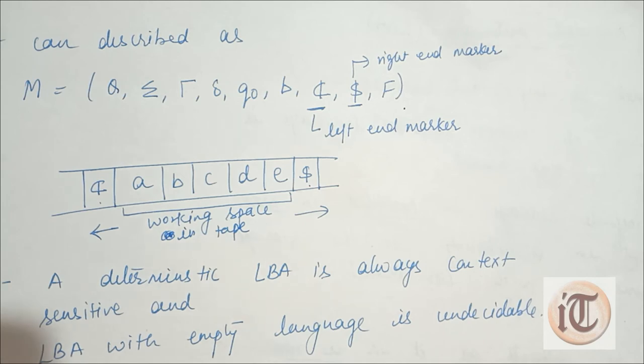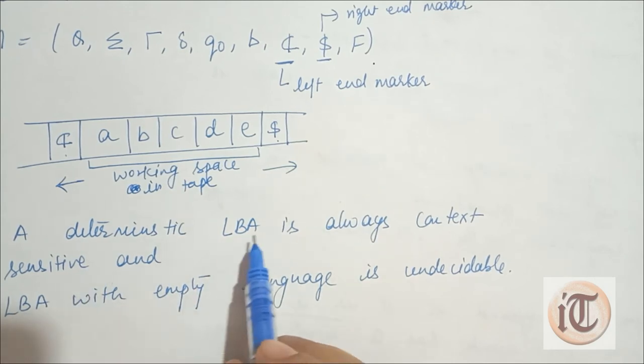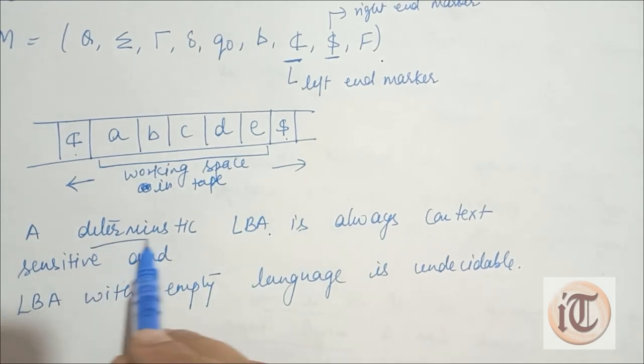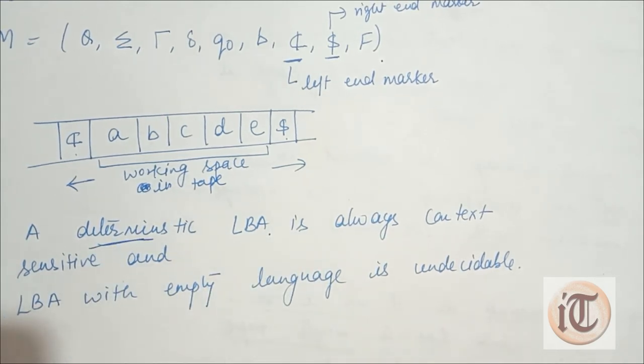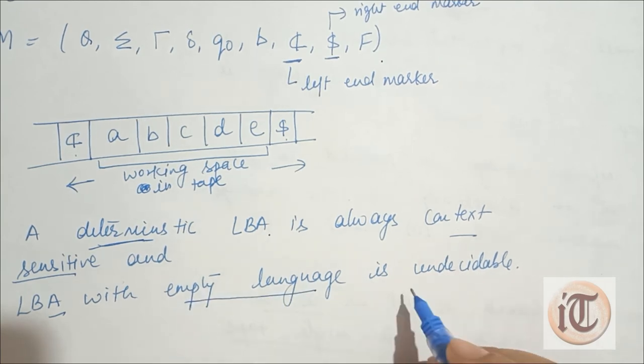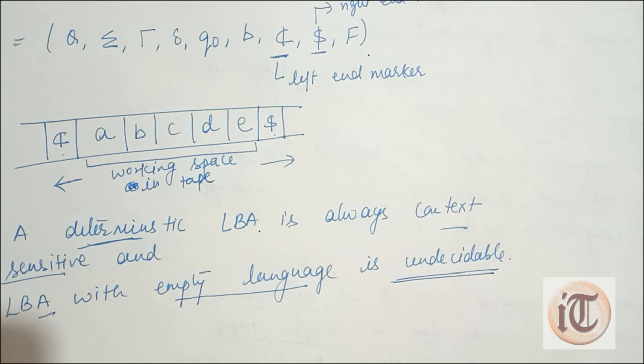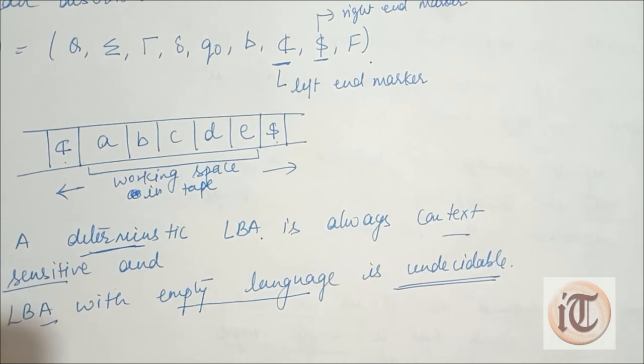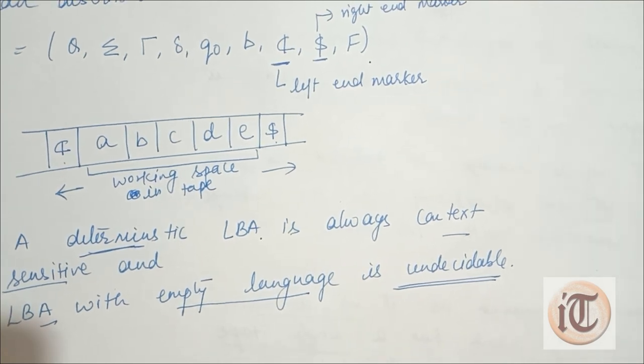The most important point is that if a linear bounded automata is deterministic, it is always context sensitive. And if the linear bounded automata is with empty language, then it is called undecidable language. I will explain undecidable languages in my next video.